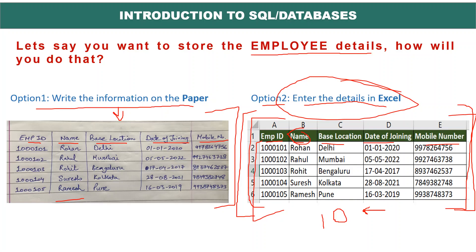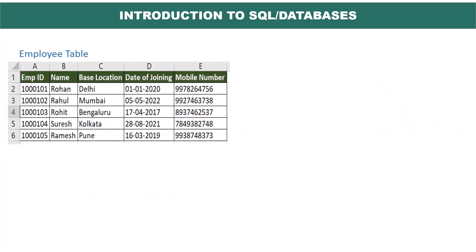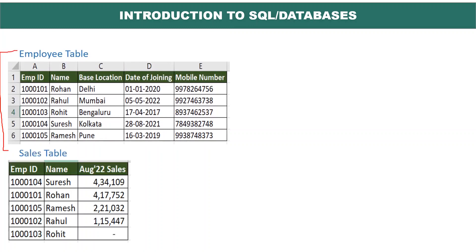That is why we need a database. For example, you have an employee table and a sales table. For each employee who has sales, you want to know their base location. In Excel, you could use VLOOKUP with employee ID as the primary key to fetch base location, date of joining, or mobile number. But with so many tables and multiple records, this is not suggested. There would be so many tables and multiple records, making this approach impractical.